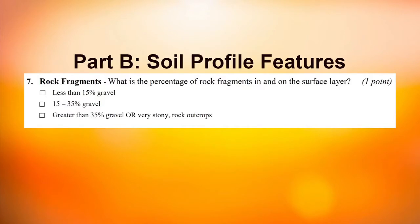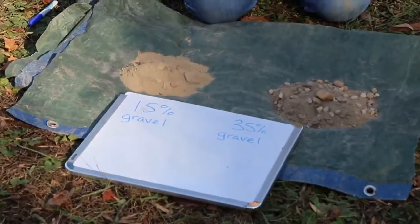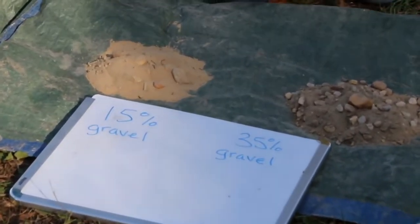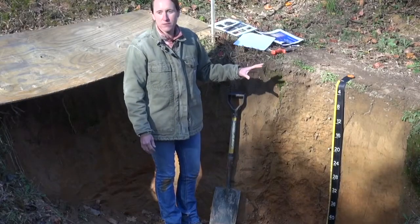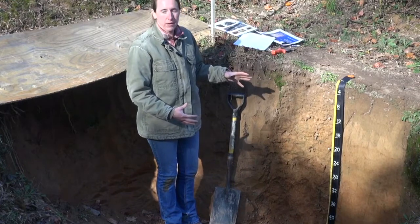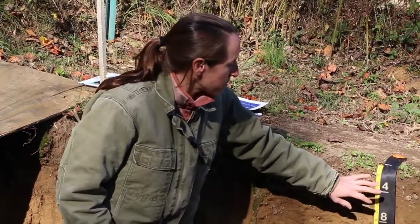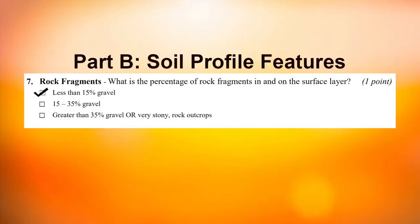Question seven asks you to look at rock fragments in the topsoil and make a visual estimate of how many rocks are present — samples will be available to compare against. Rock fragments matter because they can impact root growth and affect certain management practices. Your options are: less than 15 percent gravel, 15 to 35 percent gravel, and over 35 percent gravel. In this soil we don't see any rock fragments, so this is an example of less than 15 percent gravel.